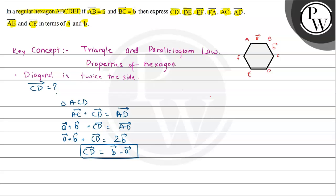This is our first answer. Now for DE vector: we see that DE is parallel to a vector only, but DE goes from D to E while a vector goes from A to B, so these are in opposite directions. Therefore DE vector would be minus a vector.